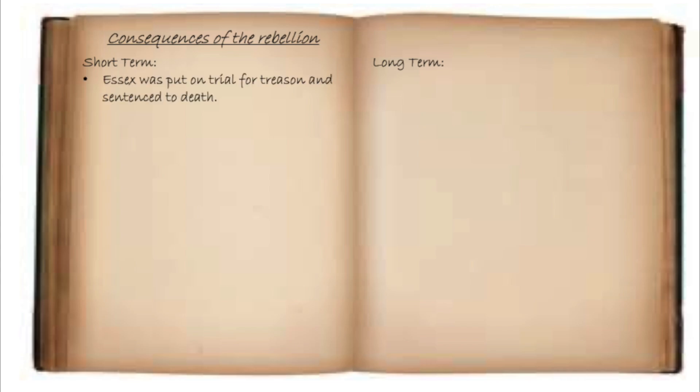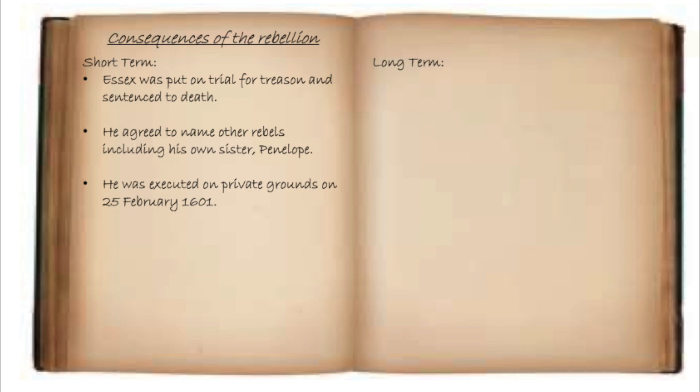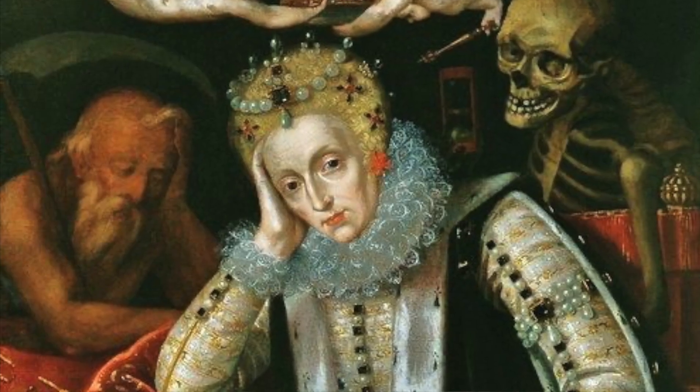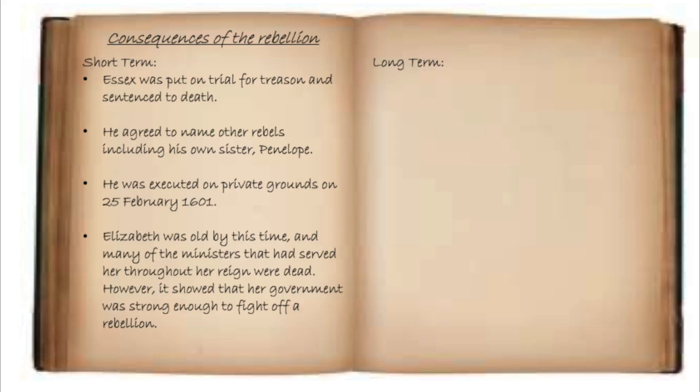Why is the Essex Rebellion so important, and what were the consequences? To encourage high-level thinking and the second-order concept of change over time, we can break these consequences down into short-term and long-term. In the short term, Essex was put on trial for treason and sentenced to death. He agreed to name some other rebels, including his own sister Penelope. He was executed on private grounds on the 25th of February 1601. Elizabeth was old by this time and many ministers who had served her throughout her reign were dead. However, it showed that her government was still strong enough to fight off rebellion.